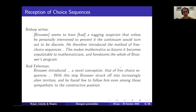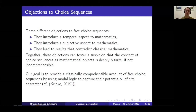It's fair to say that choice sequences have been quite poorly received outside the intuitionist school. Bishop writes that Brouwer seems to have had a nagging suspicion that unless he personally intervened to prevent it, the continuum would turn out to be discrete. He therefore introduced the method of free choice sequences, which makes mathematics so bizarre it becomes unpalatable to mathematicians and foredooms the whole of Brouwer's program. Bofferman also writes, a little less pessimistically, that Brouwer introduced a novel conception — that of free choice sequences — and with this step struck off into increasingly alien territory, finding few to follow him even among those sympathetic to the constructive position.